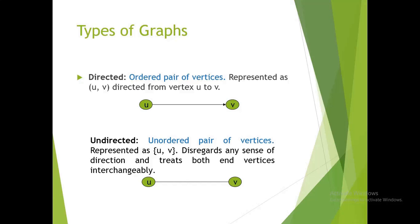Undirected graph: unordered pair of vertices represented as (U, V). This graph is absent of direction and treats both end vertices as interchangeable.